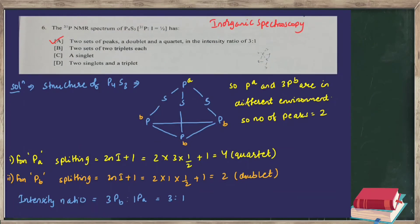The next question is from inorganic spectroscopy: the ³¹P NMR spectrum of P₄S₃ is given, with the spin of ³¹P equal to 1/2. If we know the structure of P₄S₃, we can easily deduce the NMR spectrum. In the structure of P₄S₃, there are two types of phosphorus: one unique P (labeled Pₐ) in one environment, and three equivalent P (labeled P_b) in another environment. So we observe two peaks in the ³¹P NMR.